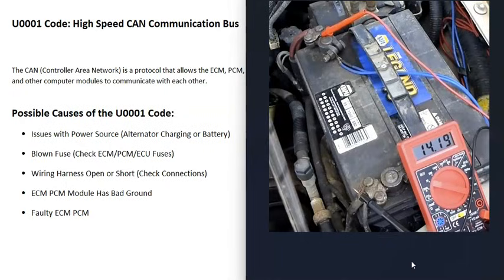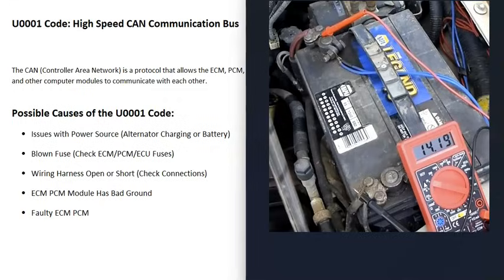If you have a multimeter, you can start up the vehicle and check the alternator output. Most vehicles are going to be between 13.5 and 14.5 volts. If it's too low or too high, then there could be an issue. Some newer vehicles have what's called a smart alternator, so you might have to look up what your alternator is rated to run at. But a quick method is to use a multimeter and confirm it's charging between 13.5 and 14.5 volts.